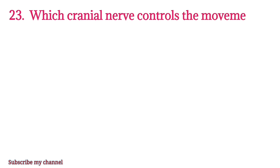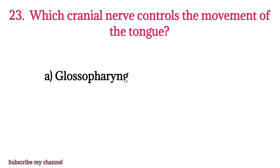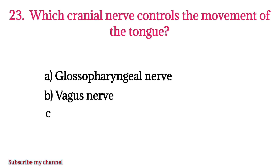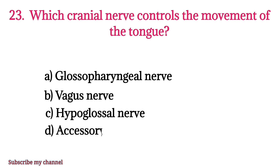MCQ number twenty-three: Which cranial nerve controls the movement of the tongue? Option A: glossopharyngeal nerve, option B: vagus nerve, option C: hypoglossal nerve, option D: accessory nerve. The right option is option C.